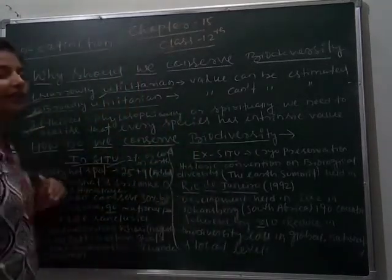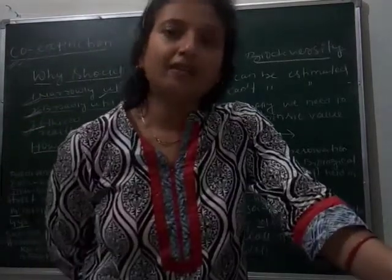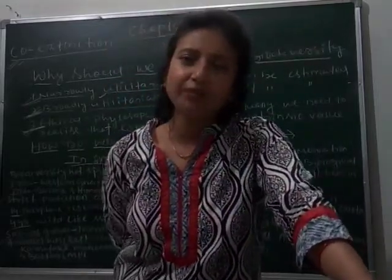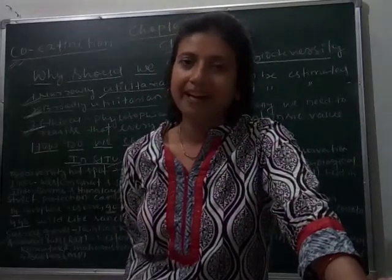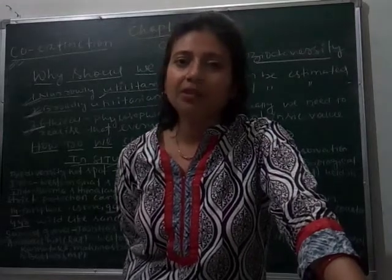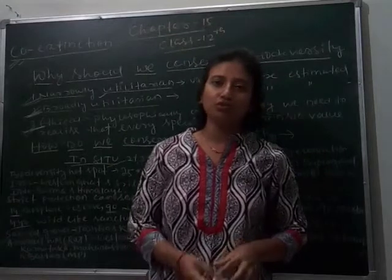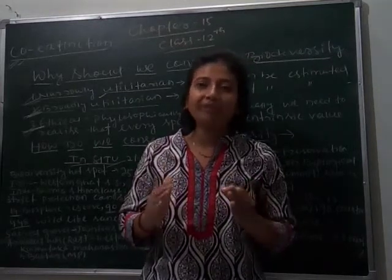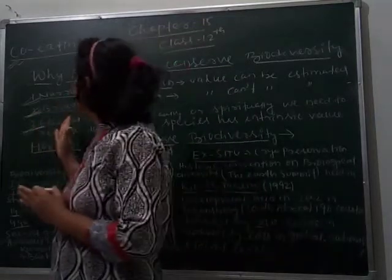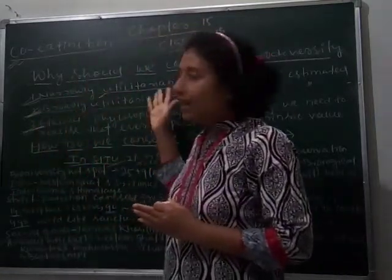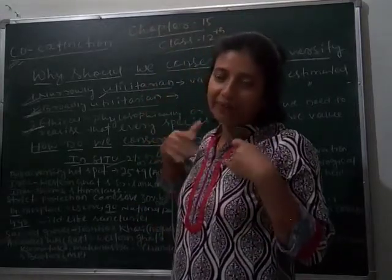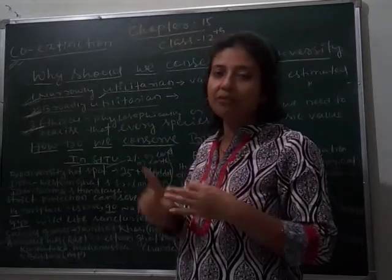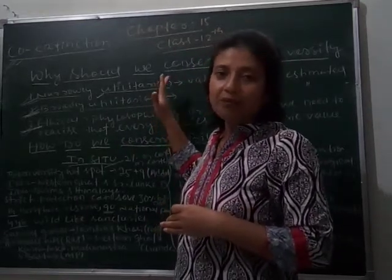The third category is ethical value. Due to ethical value, some species remain undisturbed. For example, from traditional times in India, people do not burn the peepal tree or banana tree. The neem tree is worshipped by Hindus, and we worship the cow, so cows are not killed and are protected from extinction. This is also a technique to conserve biodiversity. Since we are getting benefits from these species and they are not getting any benefits from us, it is our responsibility to conserve and protect them.